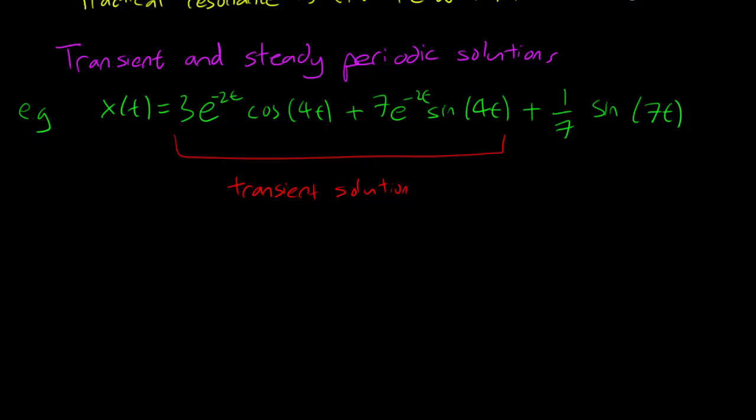We also consider this last part, the part without an exponential, the steady periodic solution. It's pretty straightforward to figure out why it's called that way, because this is periodic and it will always be periodic. As time goes on, you still have this periodic solution and it will never go away.